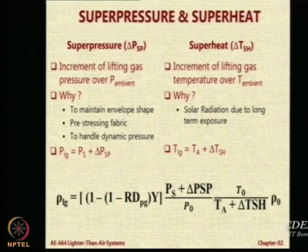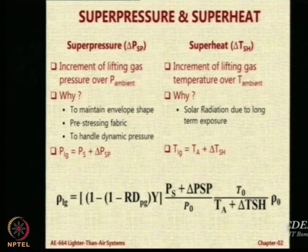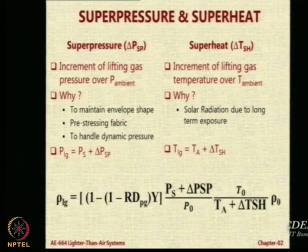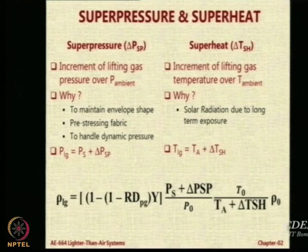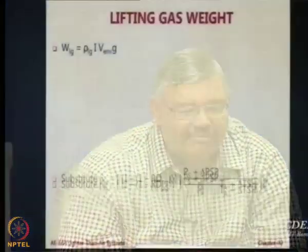This delta P is normally kept between 400 to 500 Newton per square meter. If you give too much delta P, you are stretching the membrane and the structure will have problems — there will be more chance of tearing, and if there are pinholes they will open up. This is what happened in the R-101: the pinholes opened up. So the formula gets modified: P_S becomes P_S + ΔP_SP and T_S becomes T_A + ΔT_sh. With that you can calculate the lifting gas weight.